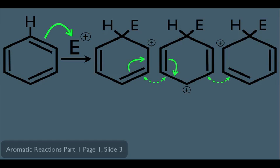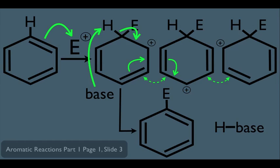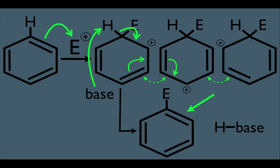The next step of the mechanism is that a base comes along and abstracts the hydrogen from the carbon bearing the electrophile. The electrons connecting that hydrogen to the ring fall down between the two carbons, recreating the double bond. As a side product, we have the base attached to the abstracted hydrogen. Our molecule is back to being aromatic.